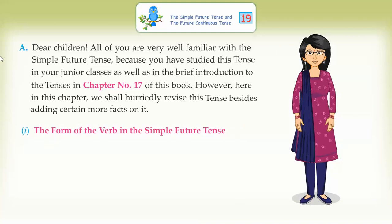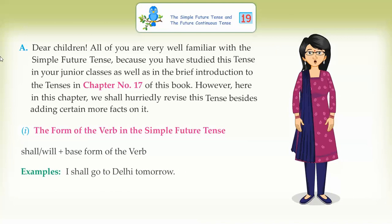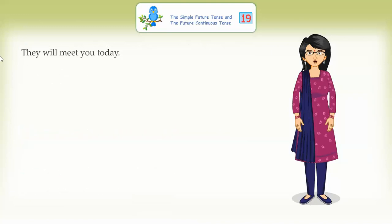The form of the verb in the simple future tense: shall/will plus base form of the verb. Examples: I shall go to Delhi tomorrow. He will come here next week. They will meet you today.